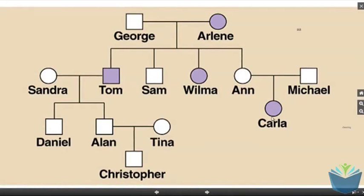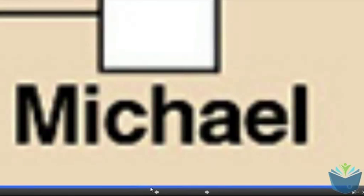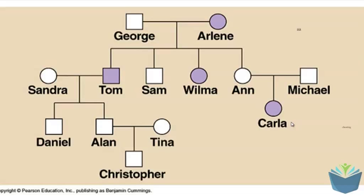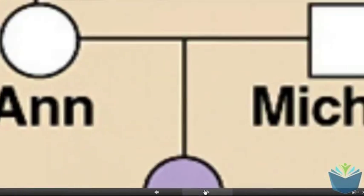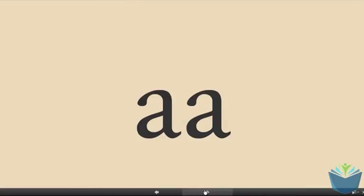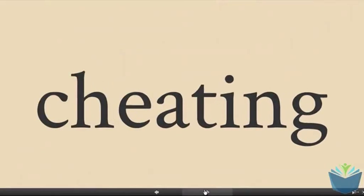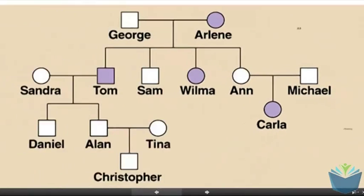A really interesting individual to look at on this family tree would be Carla. If we look at Carla, we have to look at what both Anne and Michael's genotype is. Carla has the condition, so if it's caused by a dominant allele, she must have received one of those alleles from one of her parents. We can see that both Anne and Michael don't have the condition, so they both must have small a, small a — homozygous with just the healthy allele. Now, obviously this can't be the case because they've produced a child that has the condition. This tells us, unfortunately, that Anne must have been cheating, because otherwise there's no way they could produce Carla. She must have procreated with an individual who had the condition and therefore passed it on to her child.